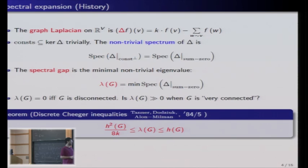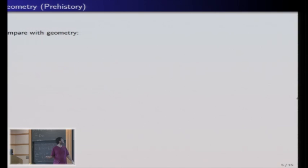And here is a positive answer by Tanner, Alon-Milman in 84-85. You really can relate the spectral gap of the graph to the Cheeger constant from both sides. Here you have some dependency on the degree. But for k regular graph, it means that you have the Cheeger constant bounded away from zero exactly when the spectral gap is.